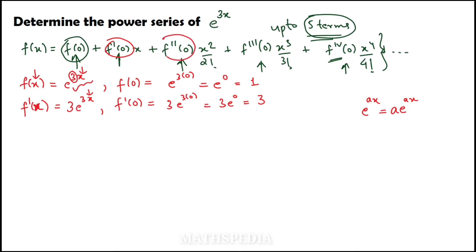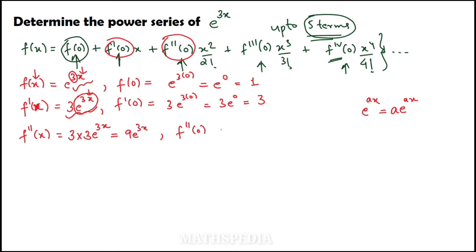Next, f''(x): I need to differentiate the previous term 3e^(3x). The 3 is already there, and differentiating e^(3x) brings down one more 3, giving f''(x) = 9e^(3x). So f''(0) = 9·e^(3×0) = 9·e^0 = 9.